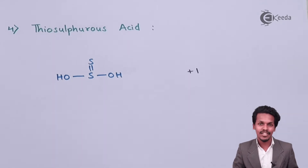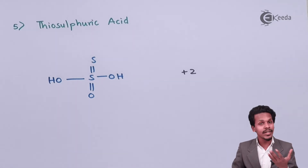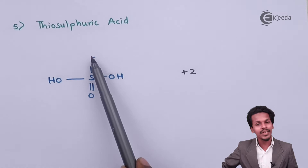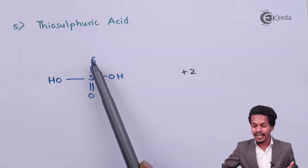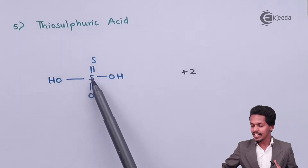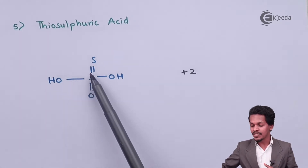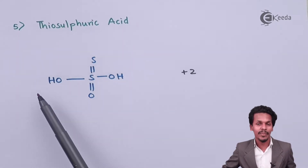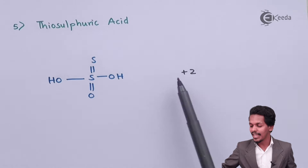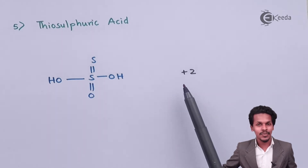The next is thiosulfuric acid, which is very similar to sulfuric acid. The only difference is that one oxygen atom is replaced by a sulfur atom — so there is one sulfur double-bonded to oxygen and one sulfur double-bonded to sulfur, with the remaining two valencies satisfied by OH groups. The oxidation state of sulfur is +2.